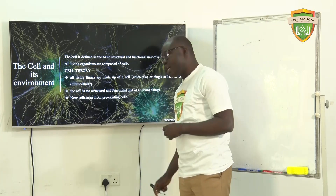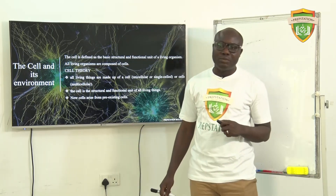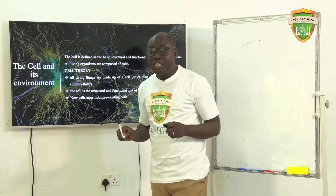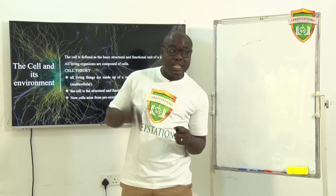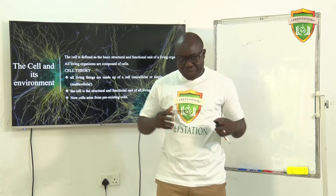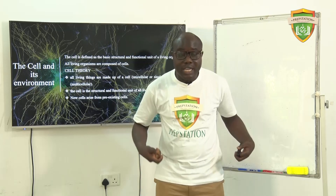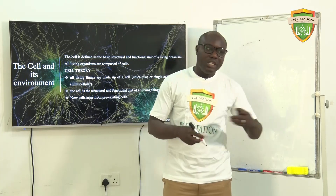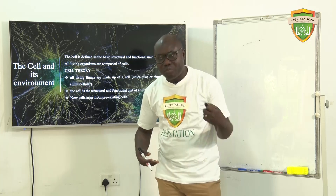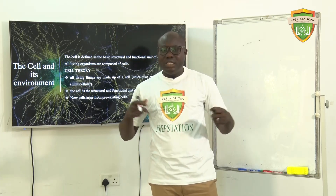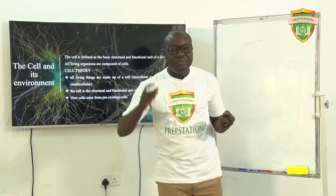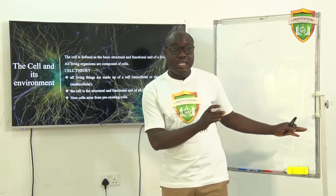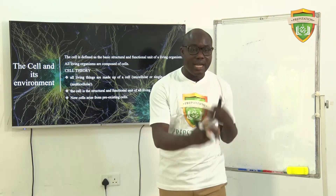The next point is that the cell is the structural and functional unit of all living organisms, meaning that every living organism functions based on the type of cell inside it. We have different types of cells: blood cells, nerve cells, stem cells, and guard cells in plants. All of them have different functions. For example, stem cells are not specialized cells, but they can later become specialized.